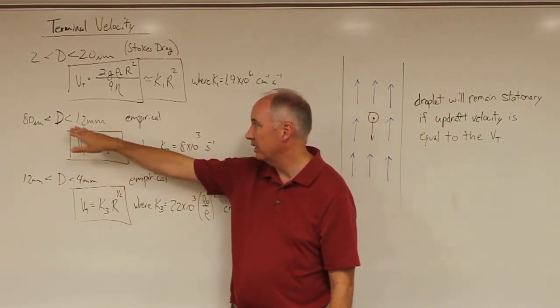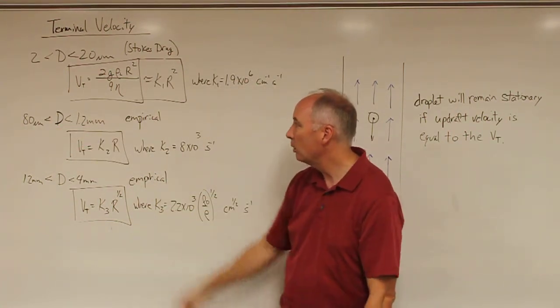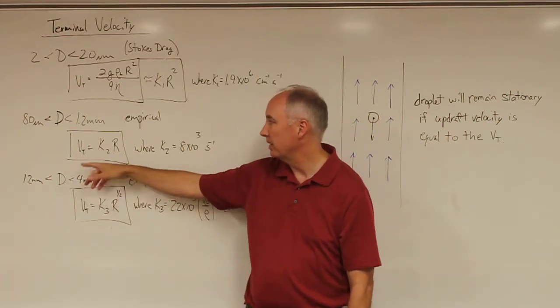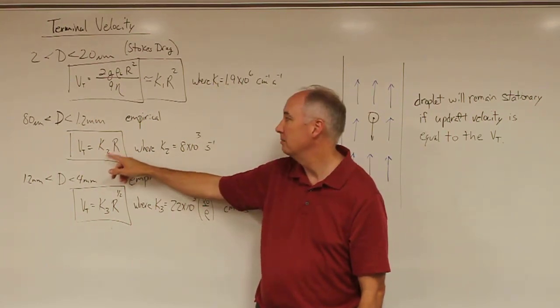For diameters between about 80 micrometers and 1.2 millimeters, we have an empirical relationship where the terminal fall speed is equal to a constant, K2, times R, where K2 is approximately equal to 8 times 10 to the third per second.